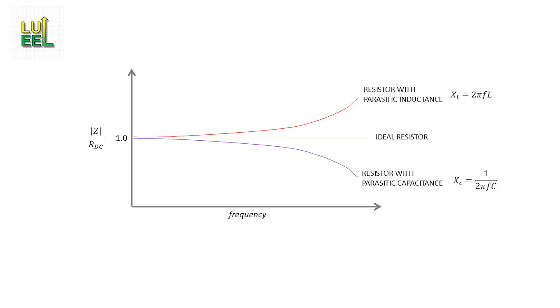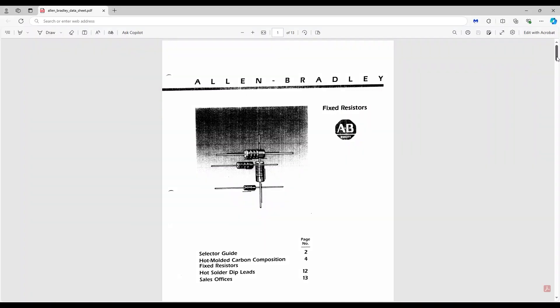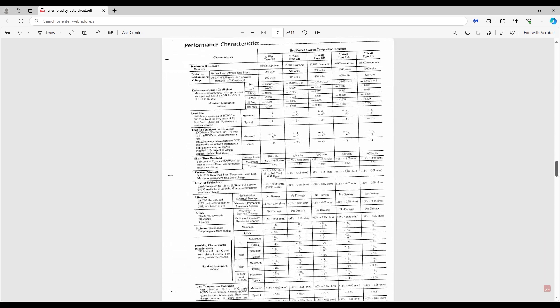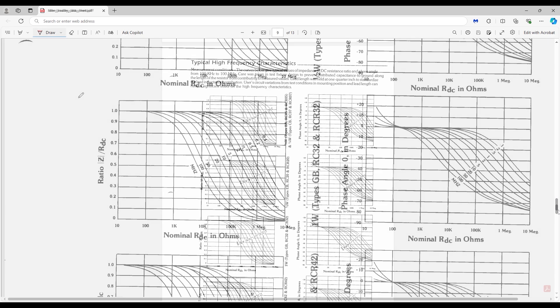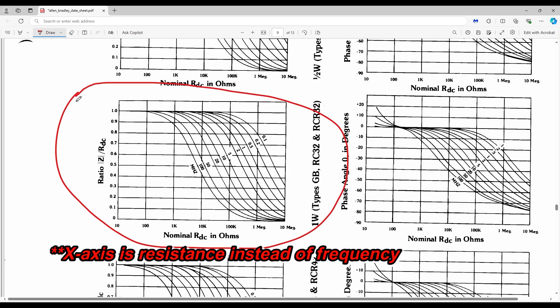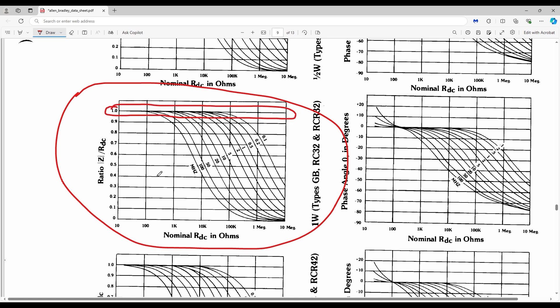So how about the classic carbon composition resistor? How do they perform? Let's examine the Allen-Bradley data sheet from 1990. They were the dominant player in carbon comps for decades. And here's their published data for their 1 watt size. And right away we see something interesting. There is no portion of this plot where the impedance ratio ever increases above 1. That means these resistors don't experience parasitic inductance, at least up to a hundred megahertz. And that's their well-known behavior and the kernel of truth in the lore about carbon comp resistors. Notice, however, that they do have a parasitic capacitive response. It starts to be noticeable at around 1k and becomes especially pronounced over 10k. At 100k, for example, the impedance ratio has dropped to 0.4 at 10 megahertz.